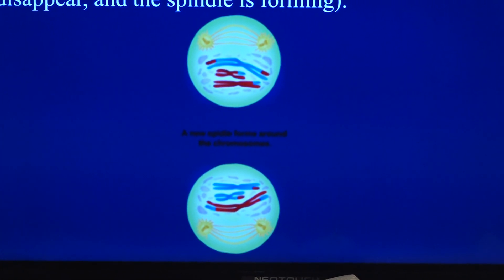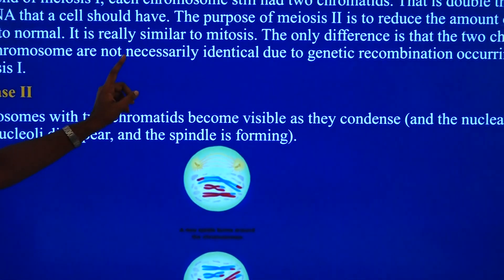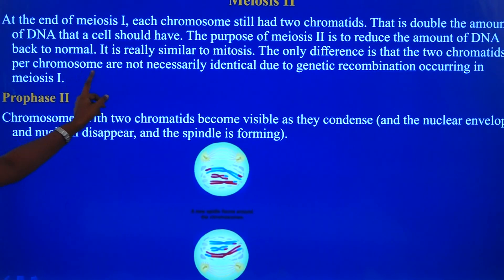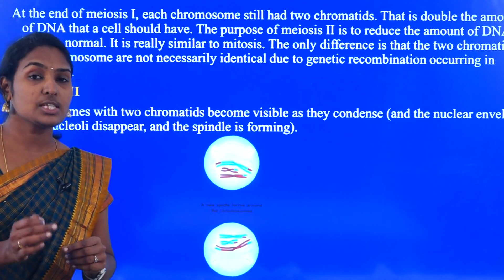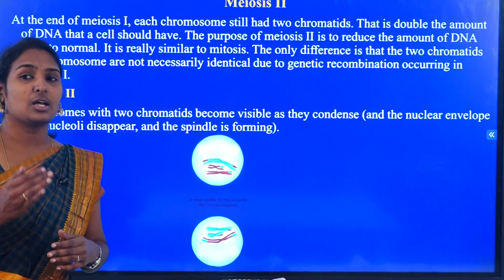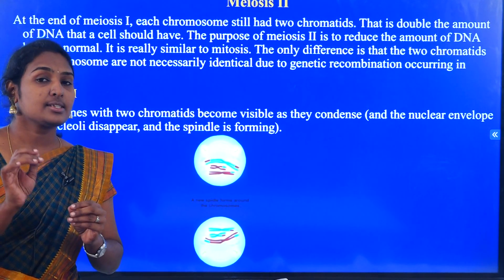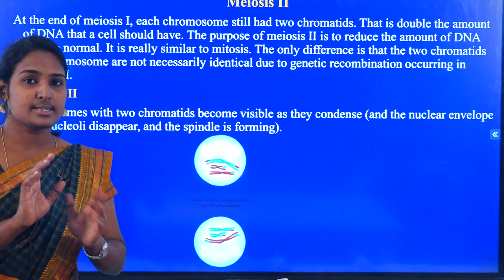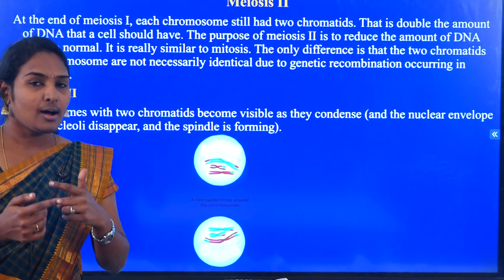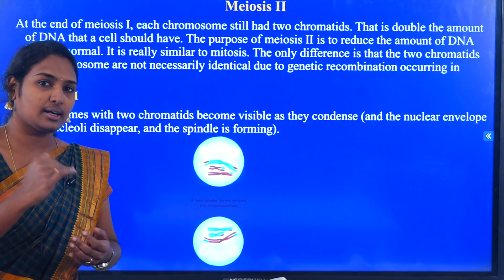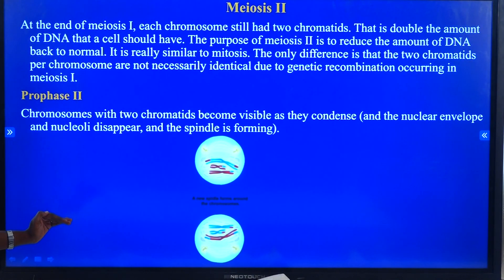Meiosis II is really similar to mitosis. The only difference is that the two chromatids per chromosome are not necessarily identical, due to genetic recombination that occurred in meiosis I. Because of recombination, the chromatids need not be the same size — they can be of different sizes, since genetic recombination has already occurred in the previous stage.